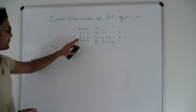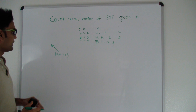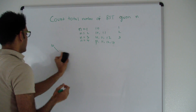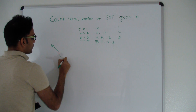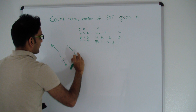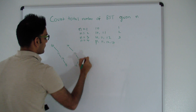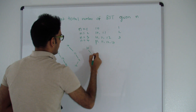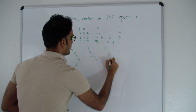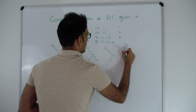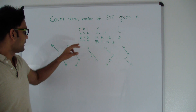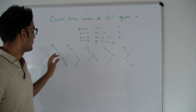So when 10 is the root, the total number of distinct binary search trees we can get is 5. We can enumerate them as: 10→11→12→13, 10→12→11→13, and so on — confirming 5 trees with 10 as root.